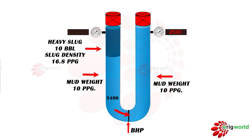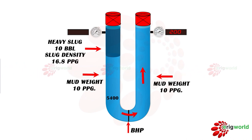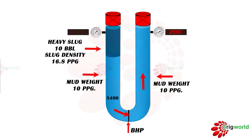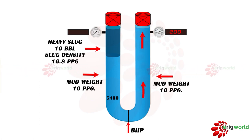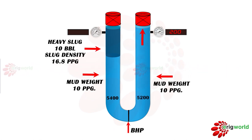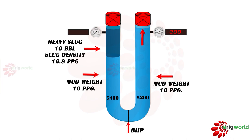Since the drill string side has a heavy slug, it exerts more hydrostatic pressure on the drill string side. Due to this, a back pressure on the lighter side can be seen on the casing gauge, which is a differential pressure between the drill pipe hydrostatic pressure and annulus side hydrostatic pressure of 200 psi.